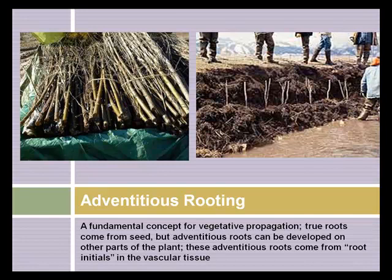All of these techniques, to some extent or other, rely on adventitious rooting. For any kind of vegetative propagation, the true roots come from the seed, but adventitious roots are developed on other parts of the plant — leaves, stems, rhizomes, stolons — they can all develop these roots. Establishment of roots is of course vital for the success of the new propagated plant.